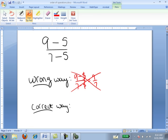Instead, you should always calculate the entire numerator, so 9 minus 5 is 4, calculate the entire denominator, 7 minus 5 is 2, and 4 divided by 2, then finally do the calculation at the end, 4 divided by 2 is 2.